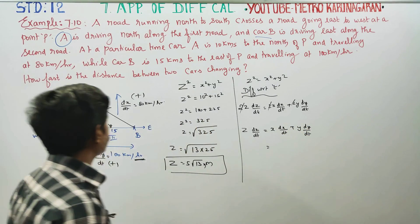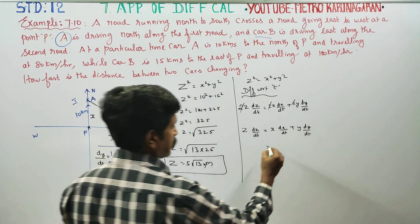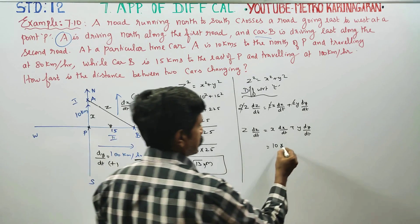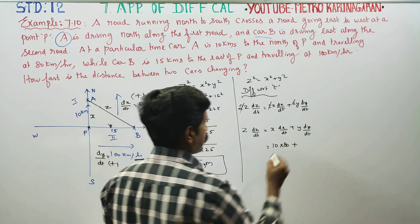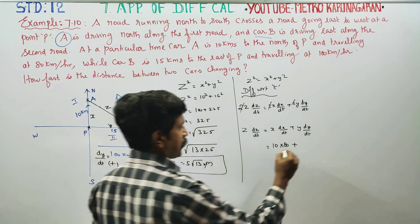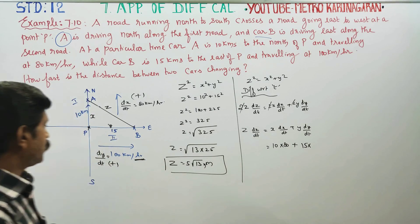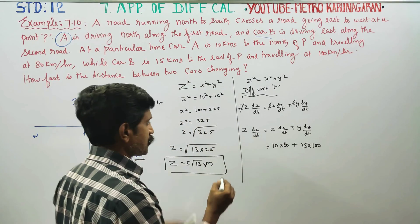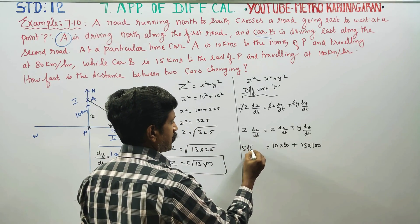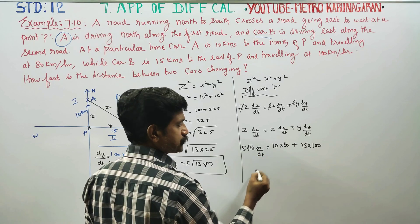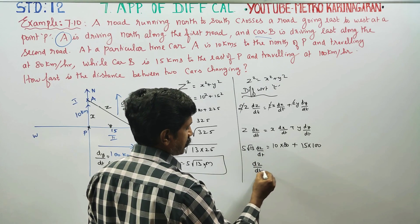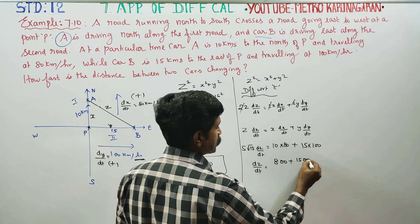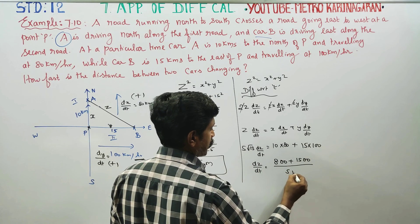Substituting values: x = 10, dx/dt = 80 km/hr; y = 15, dy/dt = 100 km/hr; Z = 5√13. So: 5√13 · dZ/dt = 10 × 80 + 15 × 100 = 800 + 1500 = 2300.